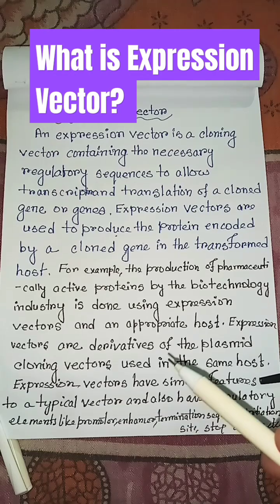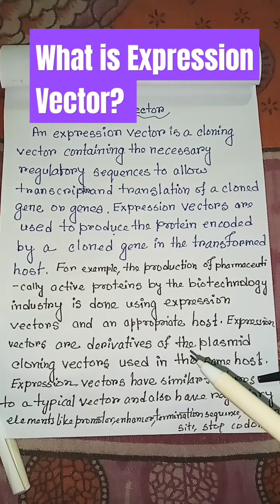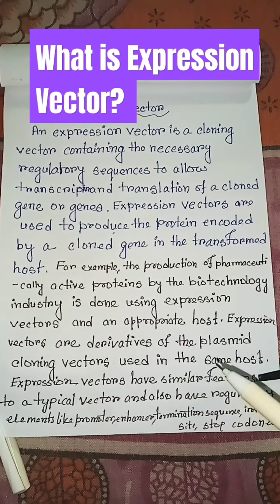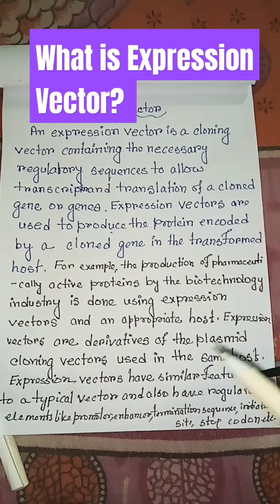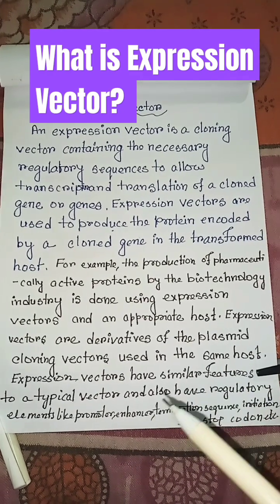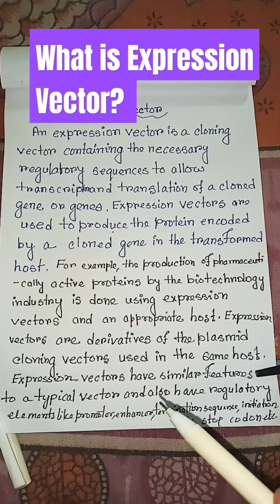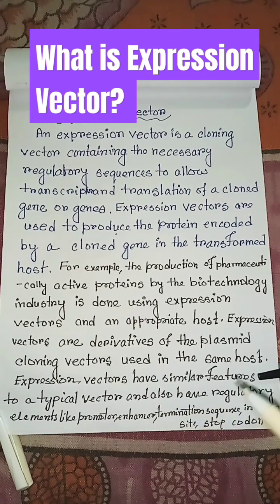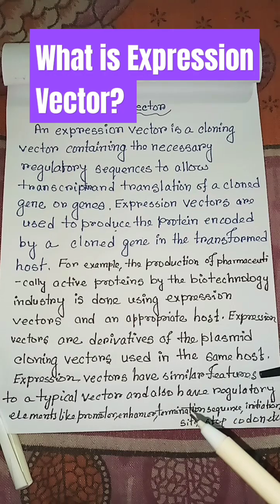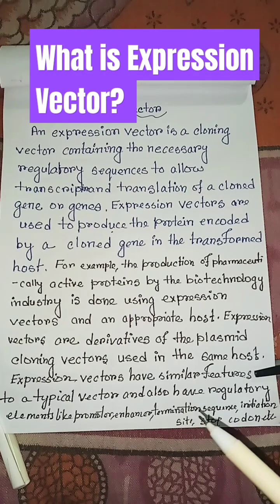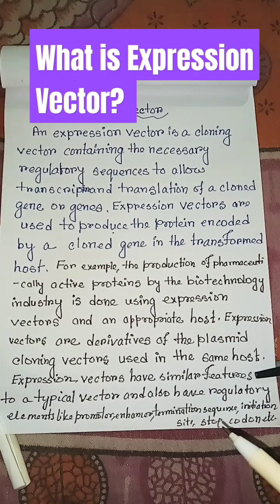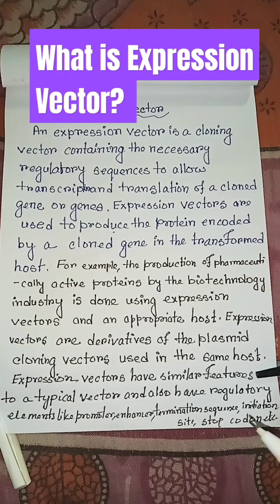Expression vectors are derivatives of the plasmid cloning vectors used in the same host. Expression vectors have similar features to a typical vector and also have regulatory elements like promoter, enhancer, termination sequence, initiation site, stop codon, etc.